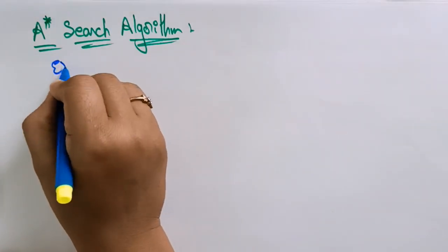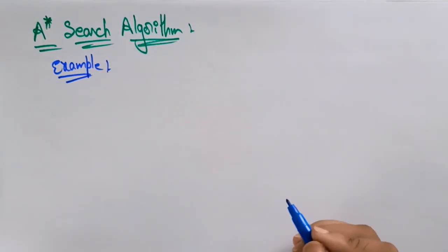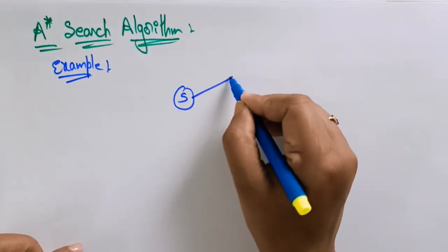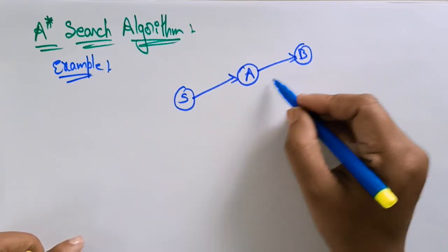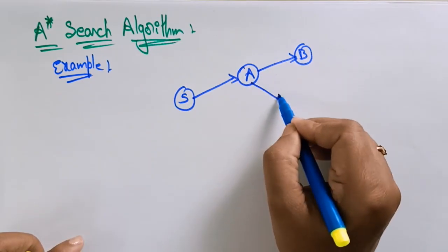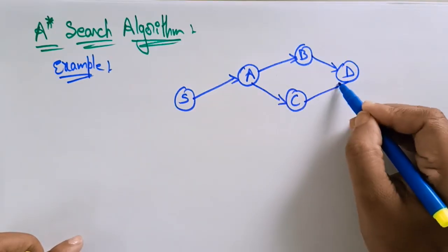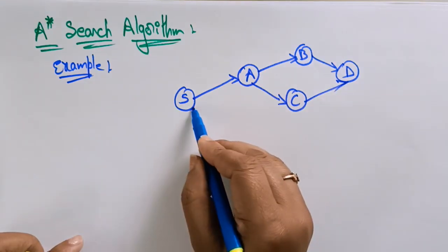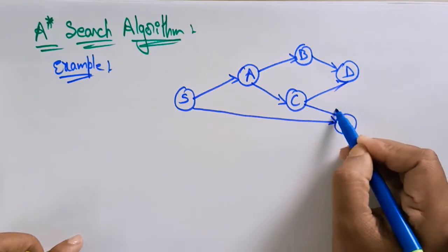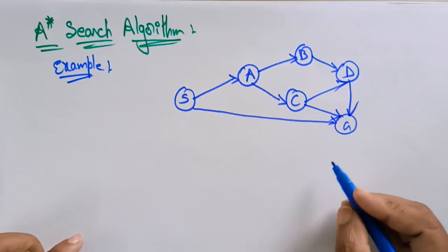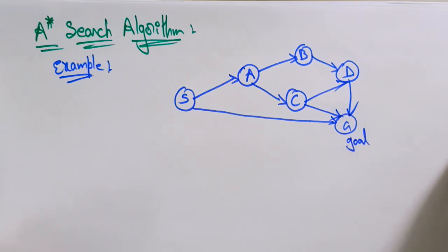Hi students, welcome back. Let's continue with the A* search algorithm. In this video I want to explain with an example. Let me take one tree: S, A, B, C, D — connecting to G. C is also connecting to G, and D is also connecting to G. This is my goal node.